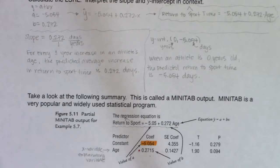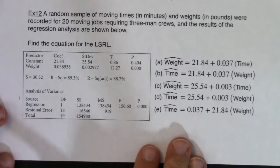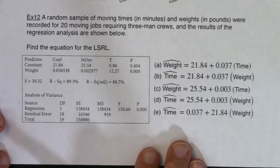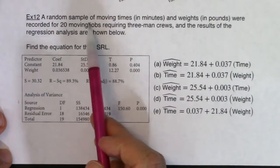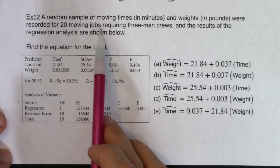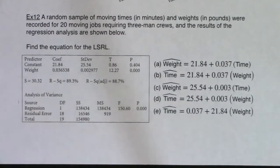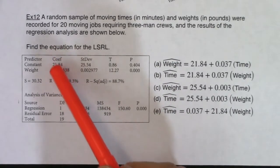What I'm going to task you with is take a look at example 12 for a moment and see if you can figure out the answer. It's a multiple choice question, pause the video for a moment, and then come back and see if you got it right. Taking a look at this one, we've got a random sample of moving times in minutes and weights in pounds recorded for 20 moving jobs requiring three-man crews, and the results of regression analysis are shown below. Find the equation of the LSRL.